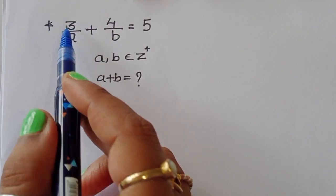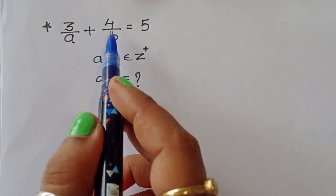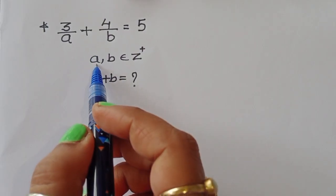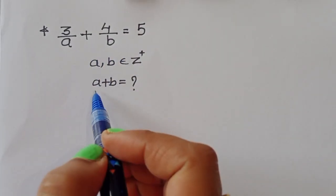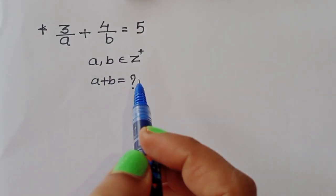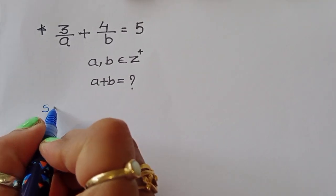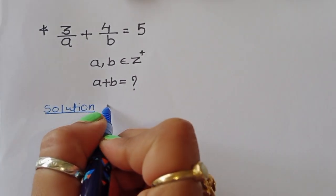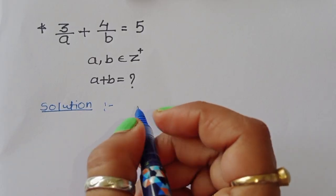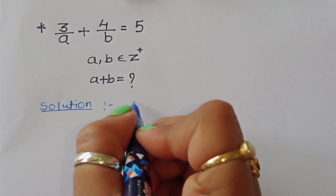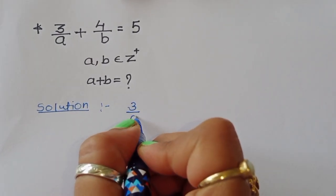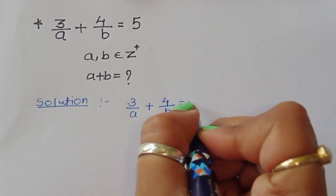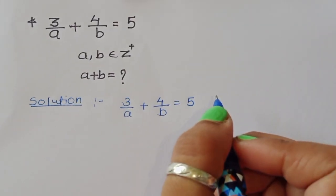The question is: given 3/a + 4/b = 5, where a and b belong to integers, we have to find out the value of a plus b. Let's start the solution. 3/a + 4/b = 5.